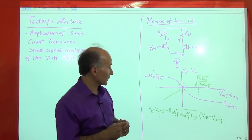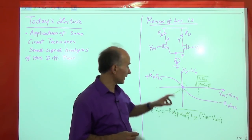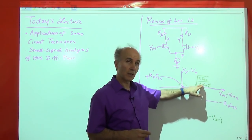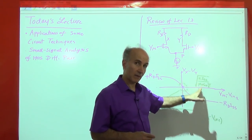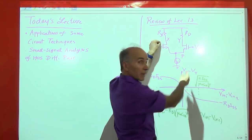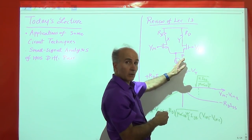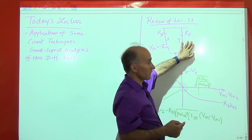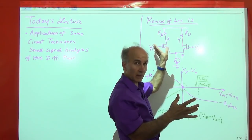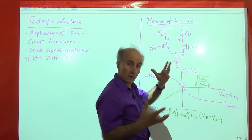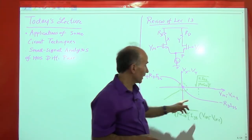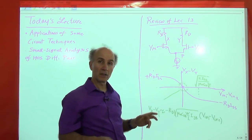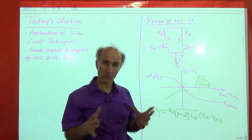We found the slope to be given by minus Rd times the square root of mu_n C_ox W/L times the tail current ISS. We played with these values — ISS and W/L — and saw how the characteristic changes when we change these parameters, which are under our control as circuit designers. We also discovered that this characteristic begins to saturate at a certain input differential voltage, because at that voltage all of the current goes to one side and turns off the transistor on the other side, leaving no gain in the circuit.